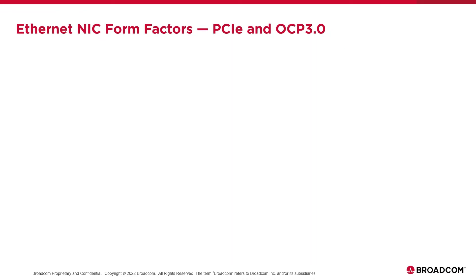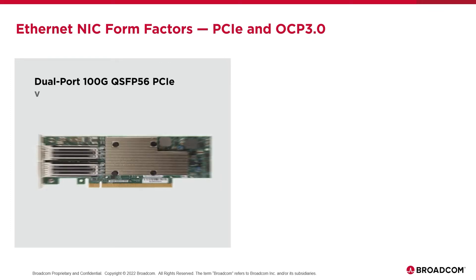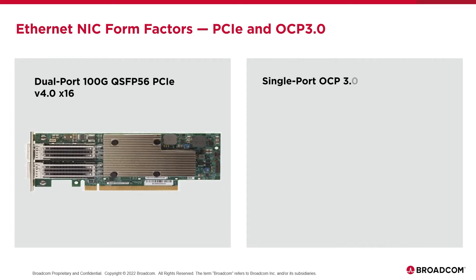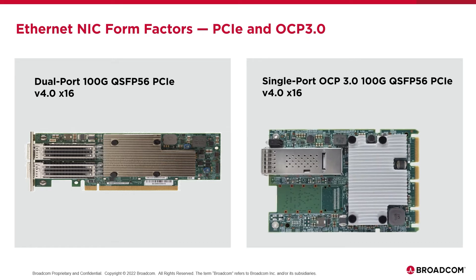Let's cover today's common server NIC form factors. Up top is a traditional PCI Express stand-up NIC. On the bottom is an OCP 3.0 compliant adapter. The first example shown is a Broadcom THOR-based dual 100GB QSFP56 stand-up NIC. This one supports 16 lanes of PCI Express at Gen4.